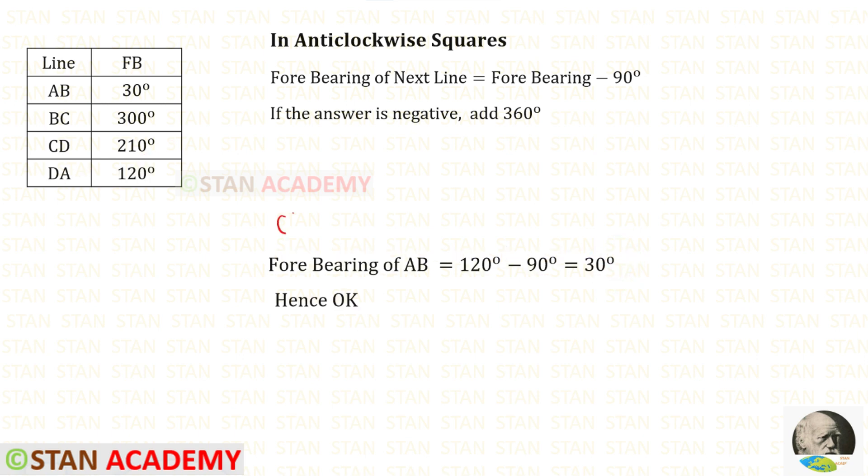Now let us apply a check. We know the fore bearing of AB which is 30 degrees. Now using this angle, let us find that one more time. 120 degrees minus 90 degrees, we will get 30 degrees. Since we have got the same value, hence okay.